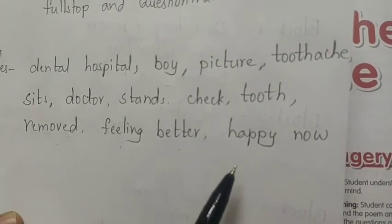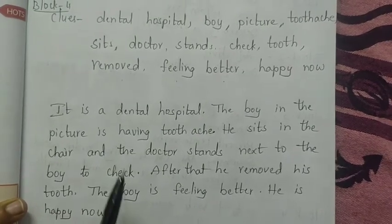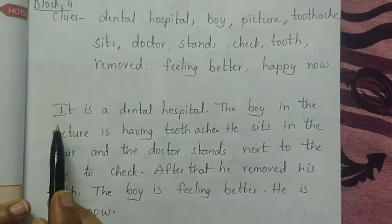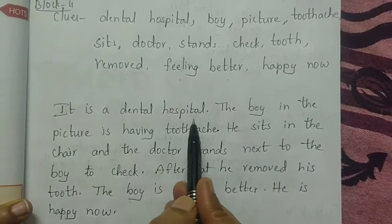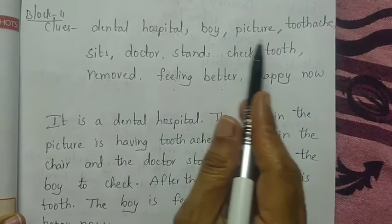Now children this is the story I have written by using these clues. See dental hospital. For that what I have written: it is a dental hospital. Boy. Picture. See I have taken these two words.